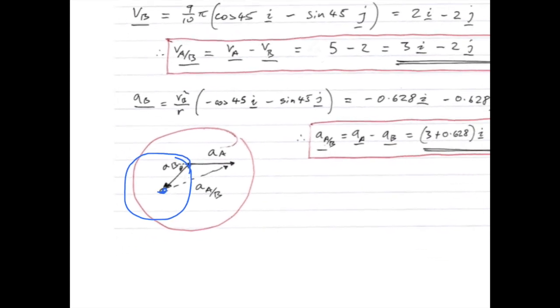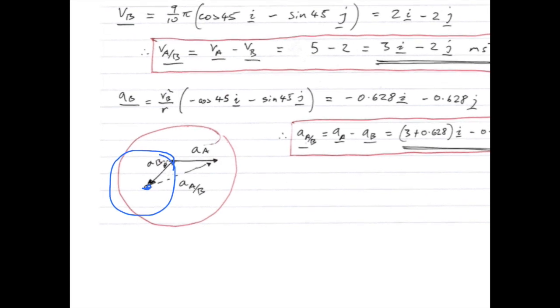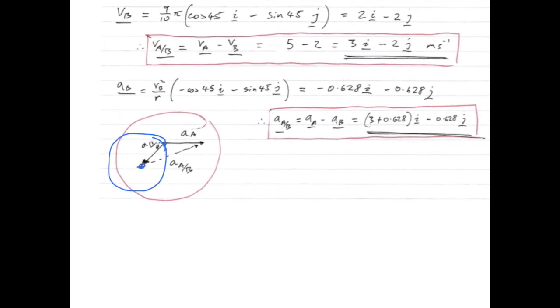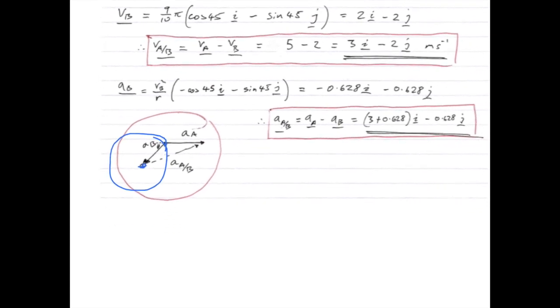In order to do this, we need to translate the circular acceleration components into i, j coordinates. So you have the magnitude, which is V squared over R, so VB squared over R.